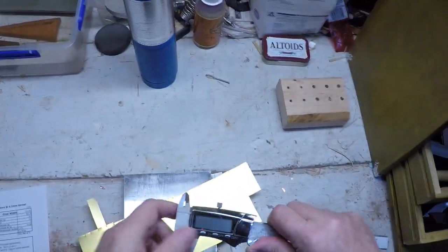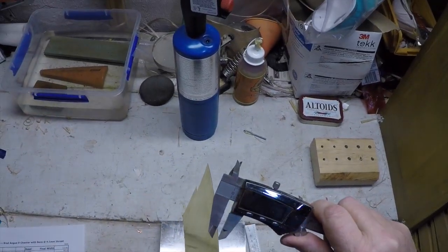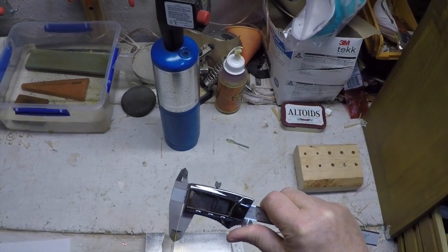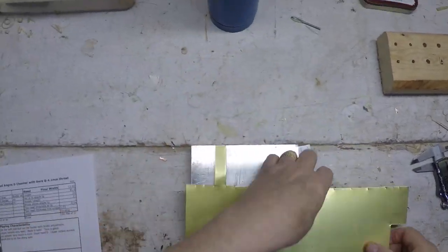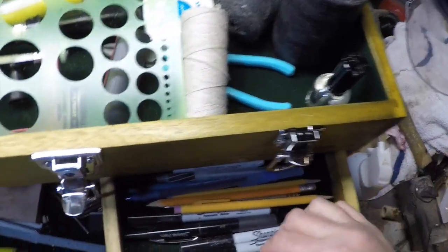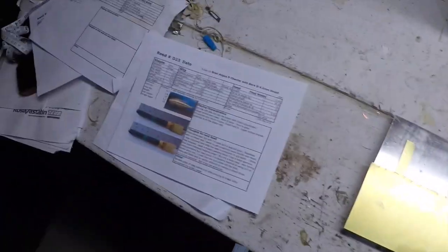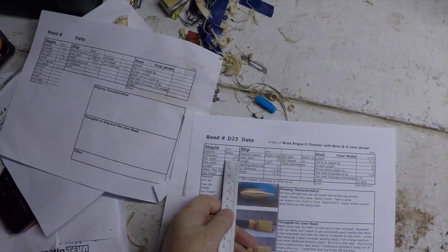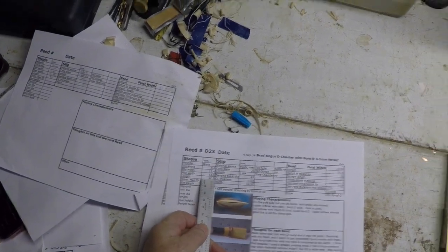With the brass it's thin enough that I don't need to anneal it. This brass is about 0.36 millimeters. I've got a little scribe somewhere.